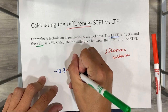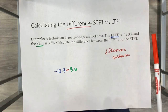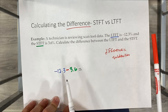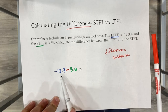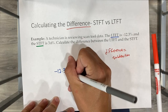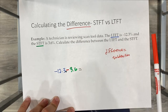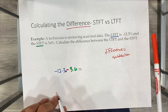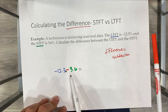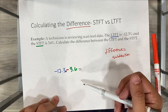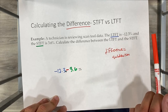We're subtracting 3.6, and that's going to be in percentage. When we have a negative minus a number, anytime you have a minus sign you can always throw an imaginary plus sign in front of that and think of it as adding two negative numbers together. So the easiest way to get to the answer is just adding 3.6 and 12.3 and leaving them in negative form.